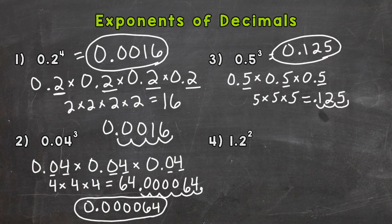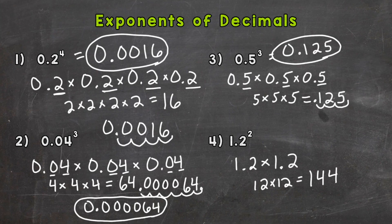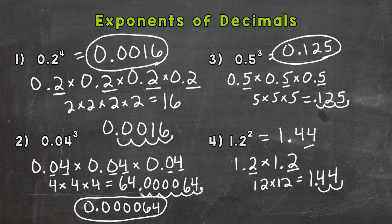Lastly, we have one and two-tenths to the power of two. So one and two-tenths times one and two-tenths — expand it out two times. We can think of this as twelve times twelve — take the decimal out — that gives us an answer of one hundred forty-four. But our original problem was one and two-tenths to the power of two, so we need to place our decimal. Looking at the original problem: one, two digits behind the decimal. So we move our decimal in twice, and our answer has two digits to the right of the decimal. The decimal is between the one and the four, giving us one and forty-four hundredths.